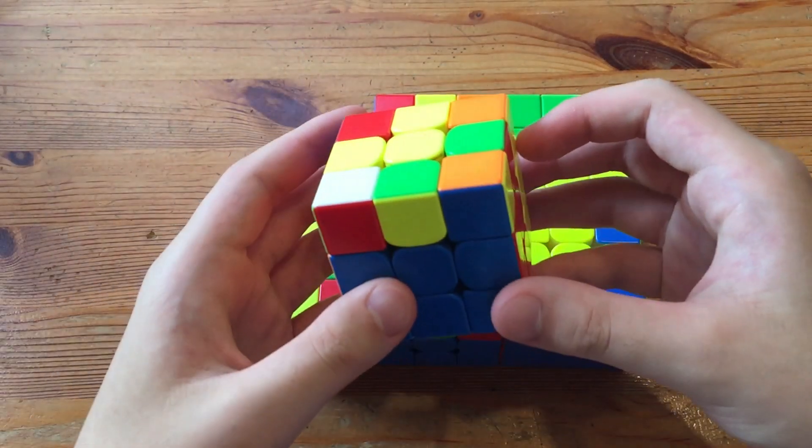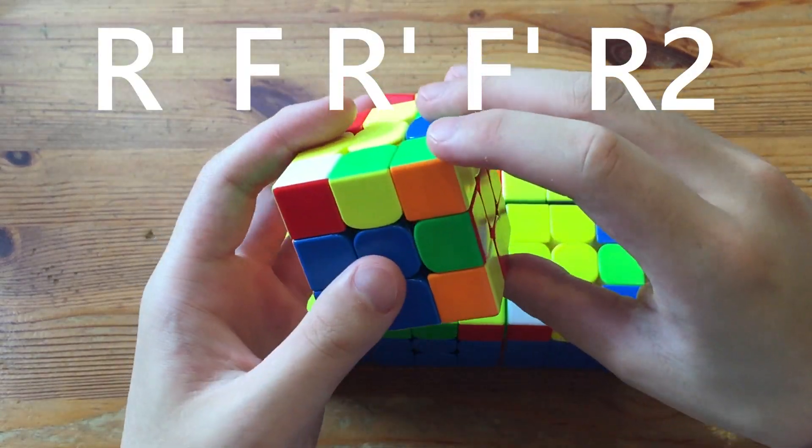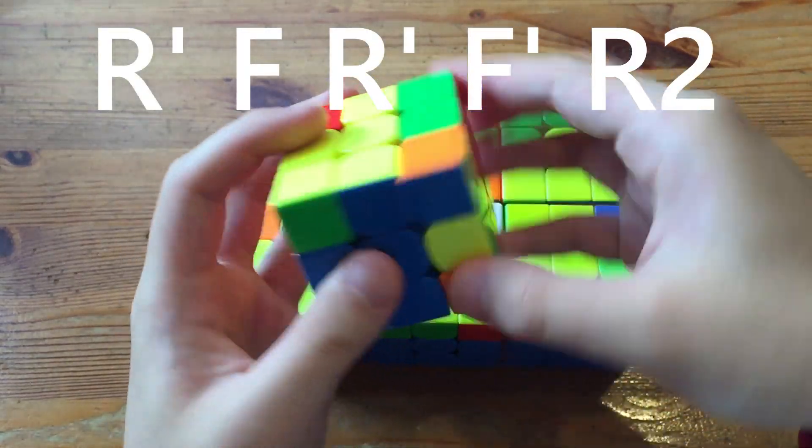What's up guys? This will be 6 ways to solve this F2L pair rotationless at this angle. The first way you just do R' hedge cancelled into R.